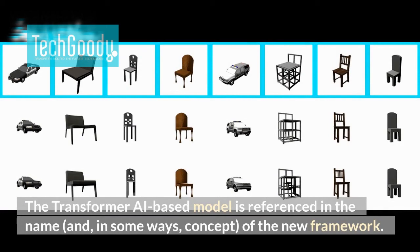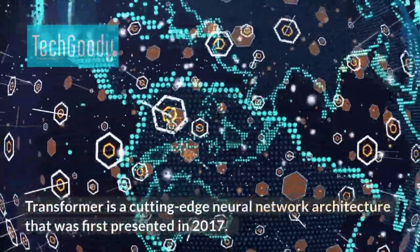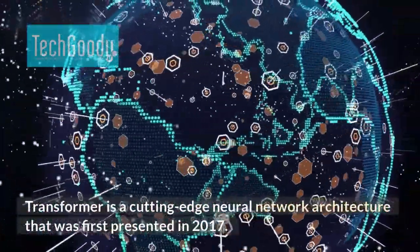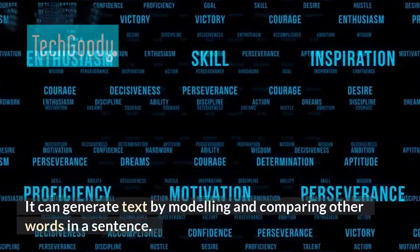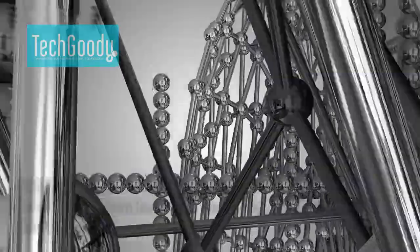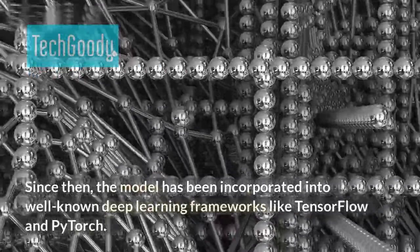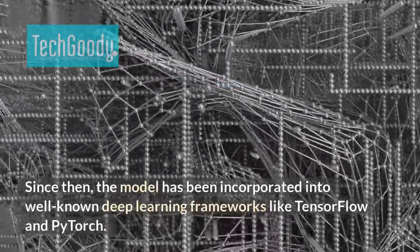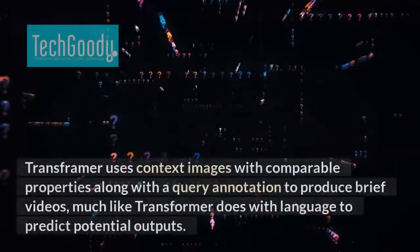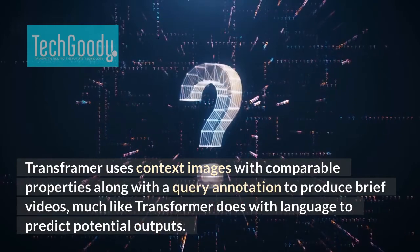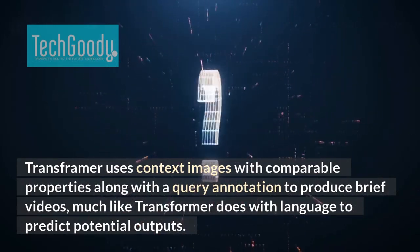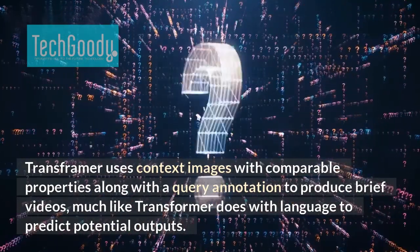The Transformer-based model is referenced in the name and concept of the new framework. Transformer is a cutting-edge neural network architecture that was first presented in 2017. It can generate text by modeling and comparing other words in a sentence. Since then, the model has been incorporated into well-known deep learning frameworks like TensorFlow and PyTorch. Transframer uses context images with comparable properties along with a query annotation to produce brief videos, much like Transformer does with language to predict potential outputs.